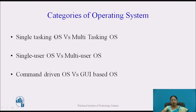What is a single tasking OS? A single tasking OS is an operating system that allows you to perform only a single task at a time. For example, if I am using the DOS operating system, I am able to perform a single task at a time. I cannot perform multiple tasks simultaneously — I need to exit from one task, then only I can do the next task. That is the single tasking OS.